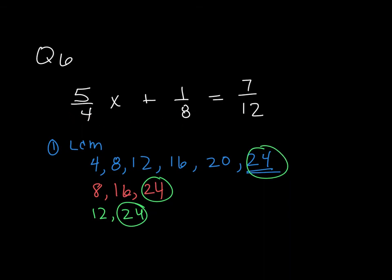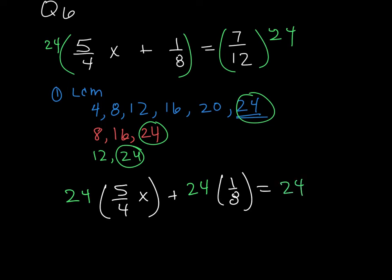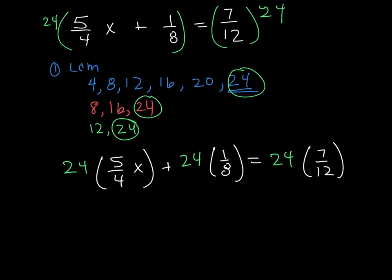You can even think about it as having a 24 on the outside and then having to distribute both of those. So when I distribute the 24, I have 24 times 5 over 4x plus 24 times 1/8 is equal to 24 times 7 over 12. Now I reduce. And again, remember, the coolest thing here is that we can get rid of all the fractions in this step.